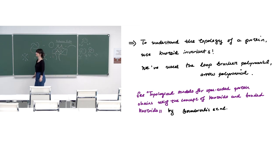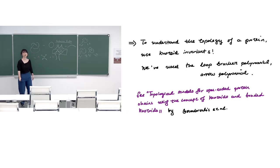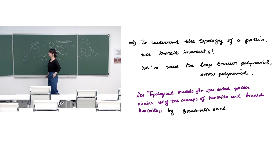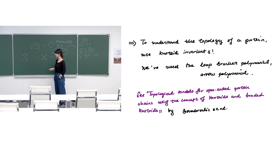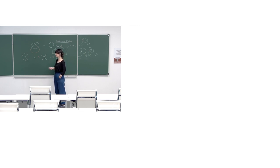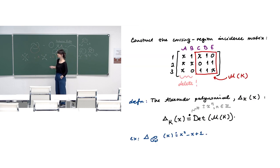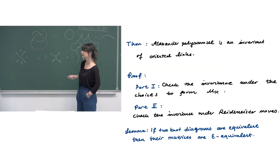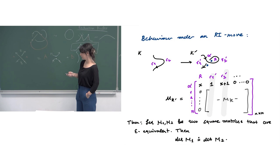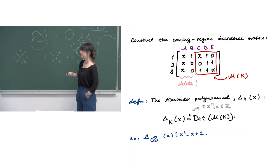The arrow polynomial was very useful for understanding proteins. There is also another variation called the loop polynomial, but I will not go deeper into this subject.